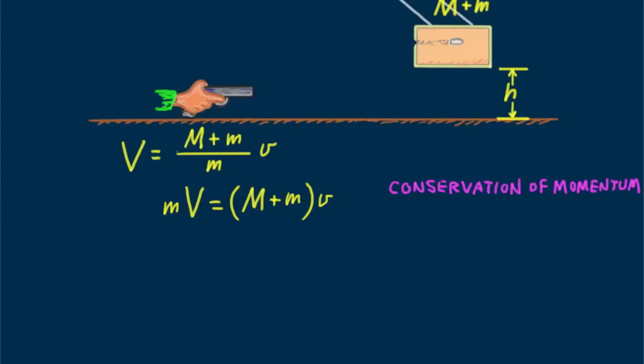Problem solved? Not quite. We don't know the velocity of the block with its embedded bullet. That's the small symbol v. The equation tells us that we must find v. But how?